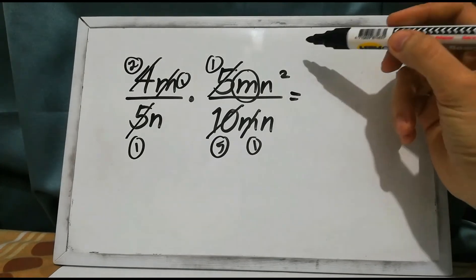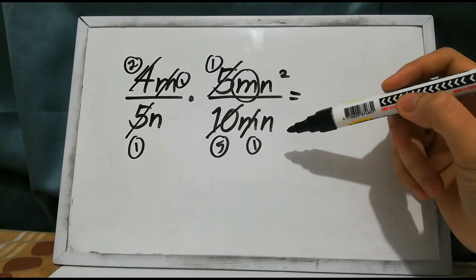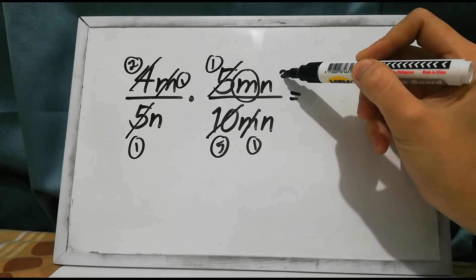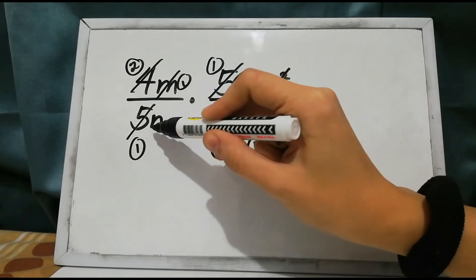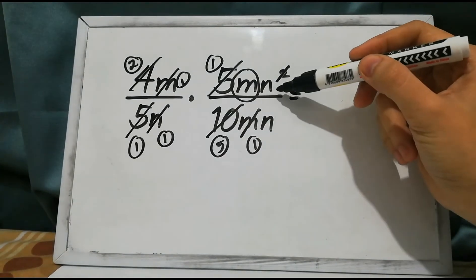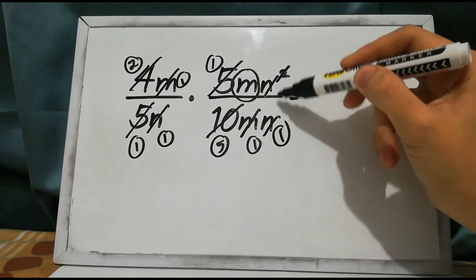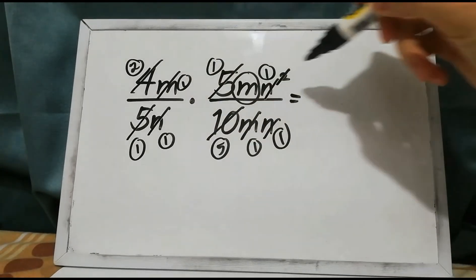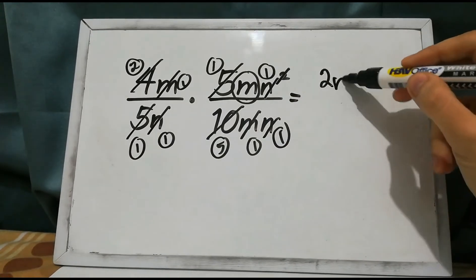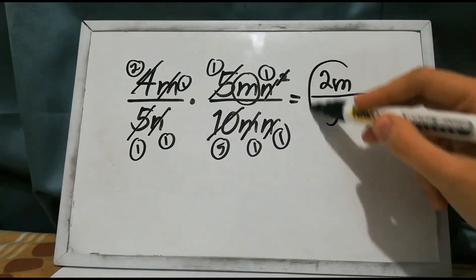For n squared in the numerator and n in the denominator, the common factor is n. n squared divided by n is n, and n divided by n is 1. So we have n over n, which is 1. Multiplying the remaining values: 2 times 1 times 1 times 1 is 2m, over 1 times 1 times 5 times 1 times 1 is 5. The product is 2m over 5.